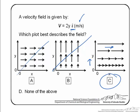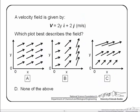Let's take a look at another one. So in this question we are given a velocity field equaling 2y plus 2. And you can see that the 2y component is in the x component of direction and the 2 is in the y component of direction. So we are asked to determine which plot below best describes this field.